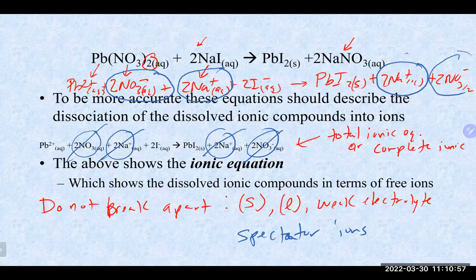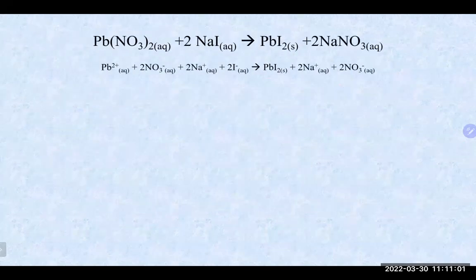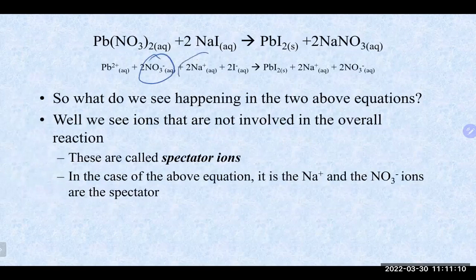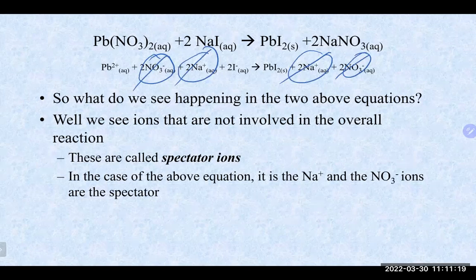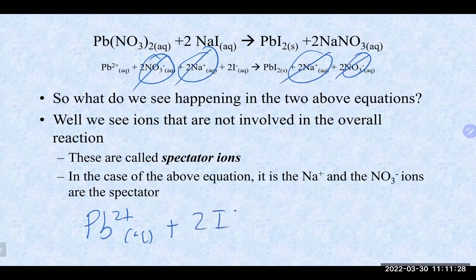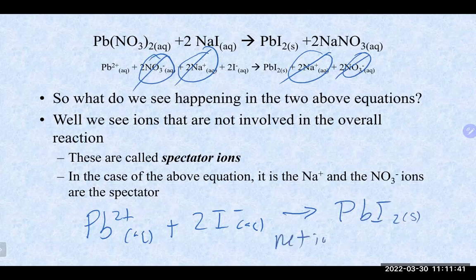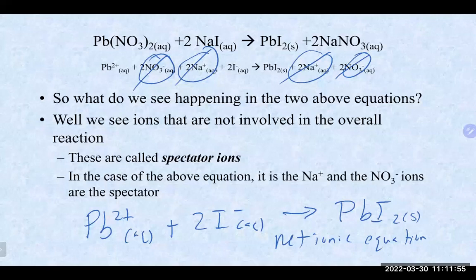After crossing out the spectator ions (sodium and nitrate), we're left with the net ionic equation — what is truly taking place when you mix those two solutions together. It is the Pb²⁺ ion from lead(II) nitrate coming together with the I⁻ ion from sodium iodide to form the PbI₂ solid — the yellow solid. The net ionic equation cuts right down to the heart of the matter: which ions are coming together and what's being formed.